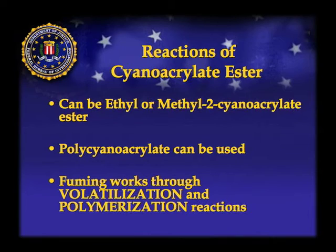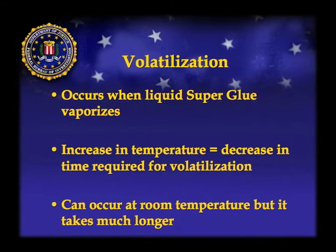It can be ethyl or methyl cyanoacrylate — basically if you buy superglue in a store, it's going to work. The two key terms to understand are volatilization and polymerization: basically heating it into a gas and then having it harden. Volatilization occurs when we apply a large amount of heat to superglue and it boils and becomes a gas. This is done through a heater or butane fuming wands — you just need a large heat source. We crank them up all the way to high, which we've measured at about 300 to 400 degrees centigrade. By the time you put the glue on there, it's a matter of seconds before it starts to volatilize.